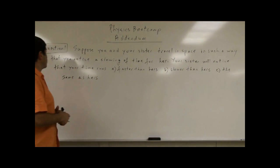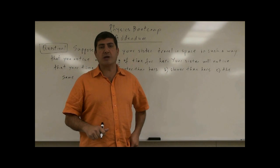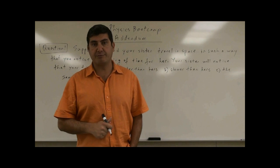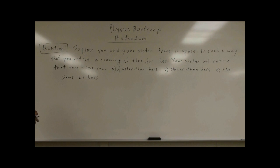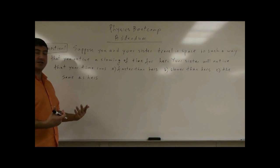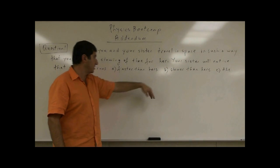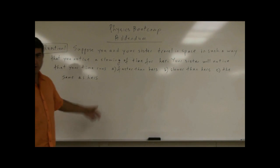So we have question one. We're going to do similar to how we did with the other test review questions. We're going to have a bunch of questions, then we'll have some more problem-solving type of questions. So the first question says, suppose you and your sister travel in space in such a way that you notice a slowing of time for her. Your sister will notice that your time runs what? Will your sister also notice that your time is slower than hers? A says faster than hers. C says the same as hers.